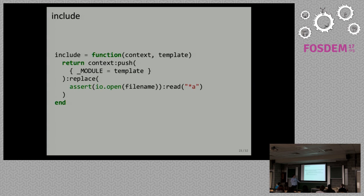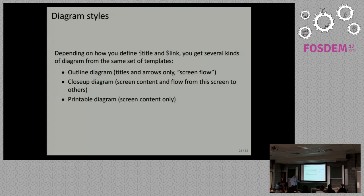And so, depending on how you define your title and link helpers, you will get several kinds of diagrams from the same set of templates, which has ended up quite useful for me. So from the same set of templates, I'm getting the outline diagram, which has only screen titles and arrows. And from the same set of templates, I'm getting the close-up diagram, which we have seen earlier, the screen itself with little arrows pointing to other screens. And also, I can get a printable diagram, which has no arrows, but only text content, screen content. So that's useful. And for me, this is the main feature of this template engine and the reason actually I even implemented it on my own.